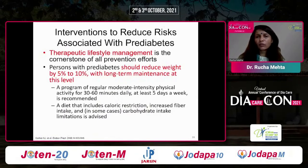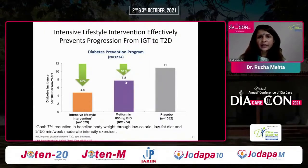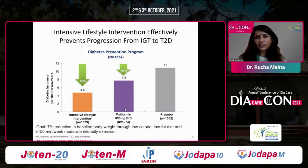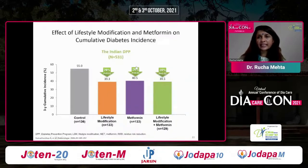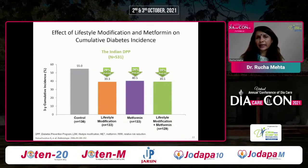Lifestyle studies consistently show that a 5 to 10 percent weight loss with long-term maintenance can prevent progression from pre-diabetes to diabetes. The Diabetes Prevention Program, with nearly 3,000 patients, demonstrated almost a 60 percent reduction in progression from IGT to type 2 diabetes with intensive lifestyle intervention versus metformin versus placebo. The Indian Diabetes Prevention Program by Dr. Ramachandran's group showed lifestyle and metformin achieved about 25 to 30 percent prevention.